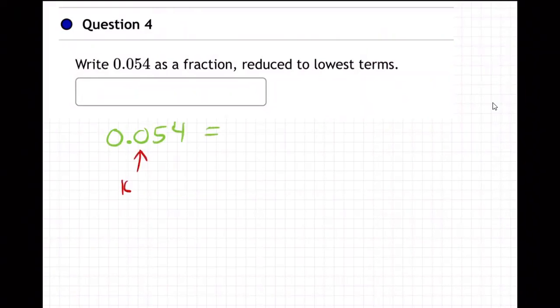Remember, the first place after the decimal is the tenths place. The next place is the hundredths place. And the next place is the thousandths place, right? So this is 54. You don't need zero, zero.